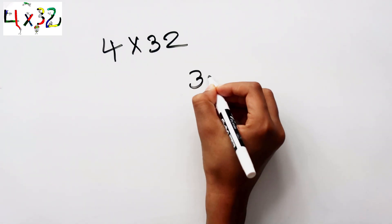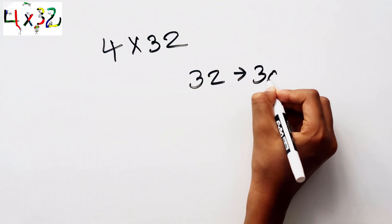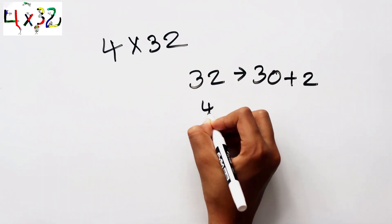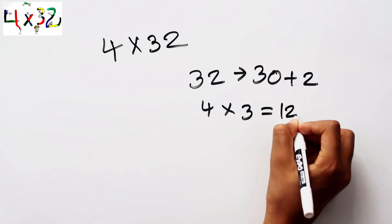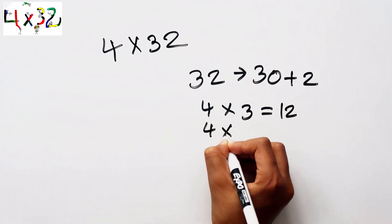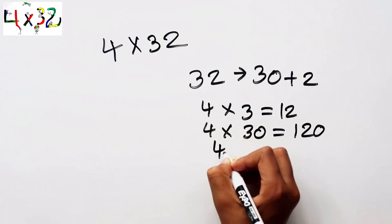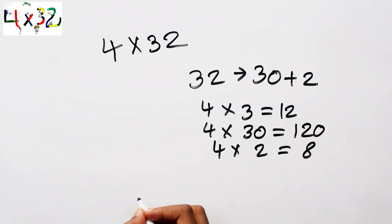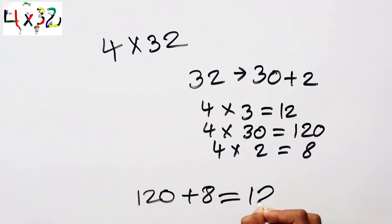Let's do it in a different way. Thirty-two can be split into thirty plus two. Four times thirty equals a hundred and twenty. Four times two equals eight. One hundred and twenty plus eight equals a hundred and twenty-eight.